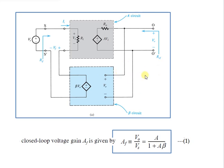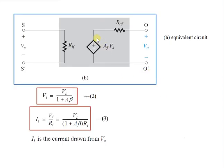Now let us draw the equivalent circuit, because in this tutorial we will analyze and find out the input resistance and output resistance of the series shunt topology. The equivalent circuit is represented with the input resistance as RIF and the output resistance as ROF.